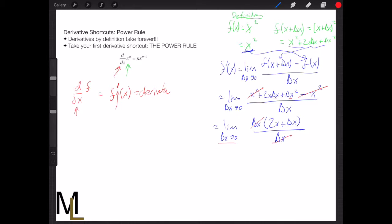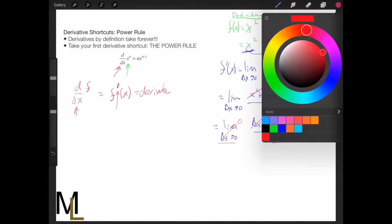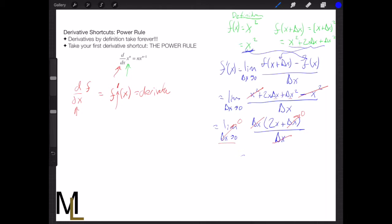And now we can take the limit as delta x goes to 0 because we no longer have a delta x on bottom, so it will not blow up to infinity, and this goes to 0 due to the limit. And we're left with what? We're left with 2x.